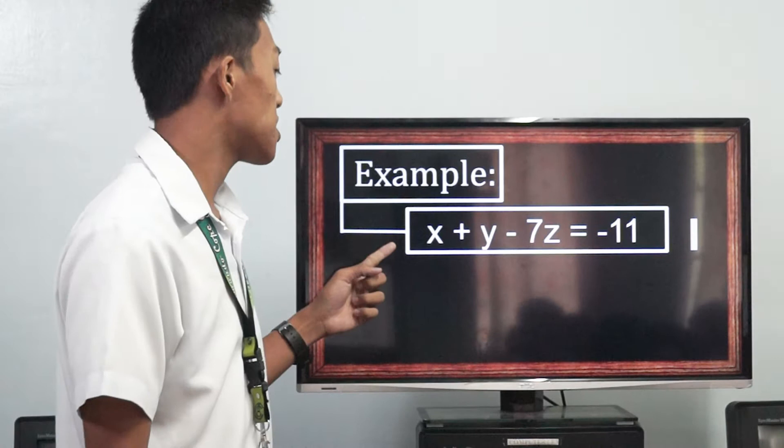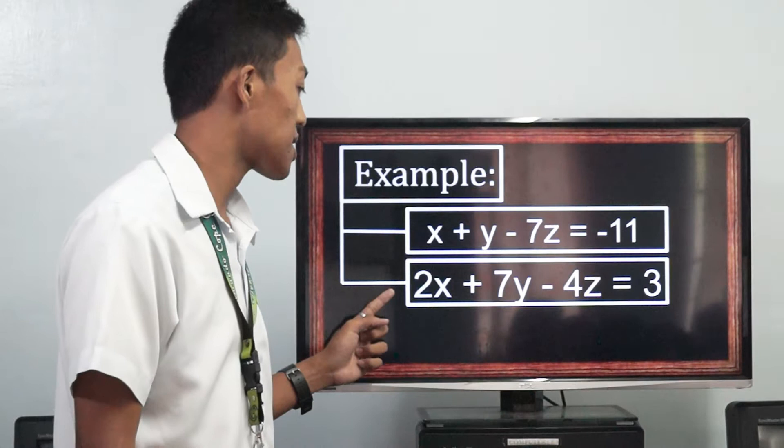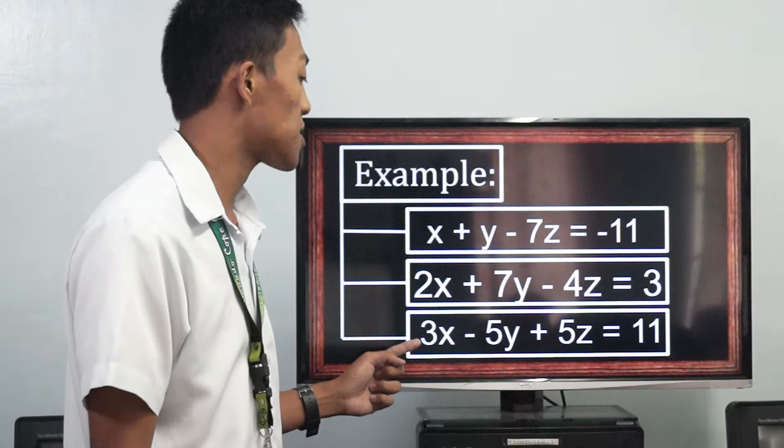Here are our examples. Our first equation is x plus y minus 7z equals negative 11. Our second equation is 2x plus 7y minus 4z equals 3. And our third equation is 3x minus 5y plus 5z equals 11.